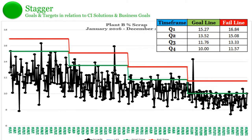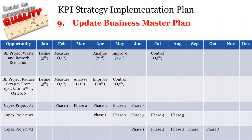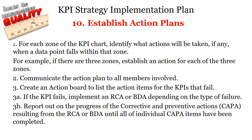In the staggered goal and target line approach, the final chart will appear something like the chart displayed here. In this chart, we see how each new quarter contains its own target and goal lines. Step 9: Update the master plan after we have created the KPI chart. We update the master plan with the new projects and KPI goals and target lines. These projects will be staggered based on the timing of the different milestones and completion dates. For each zone of the KPI chart, identify what actions will be taken, if any, when a data point falls within that zone. For example, if there are three zones, establish an action for each of the three zones.